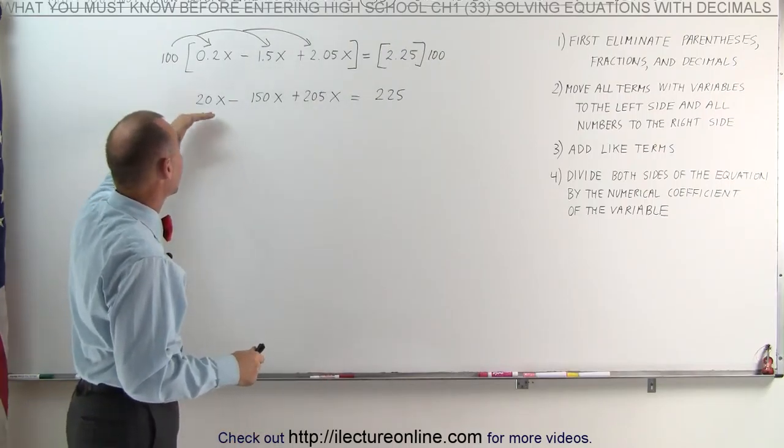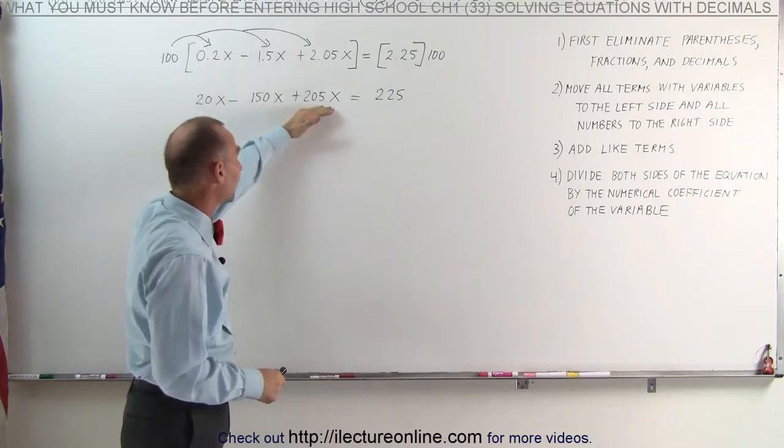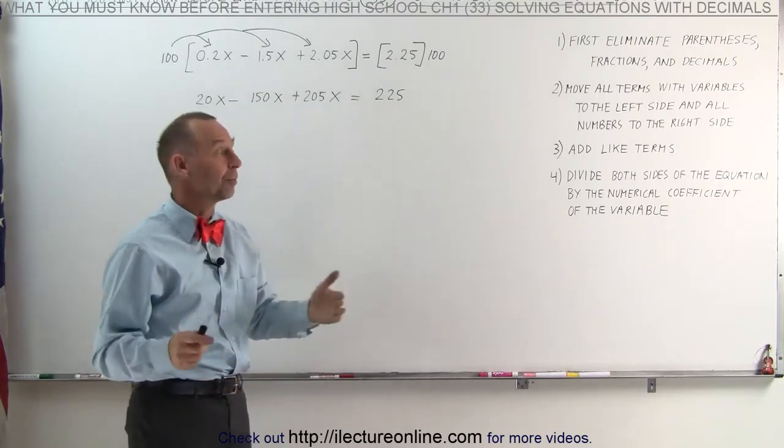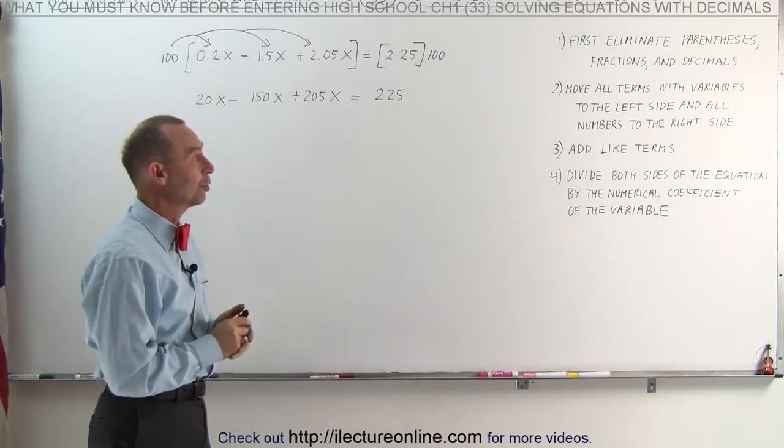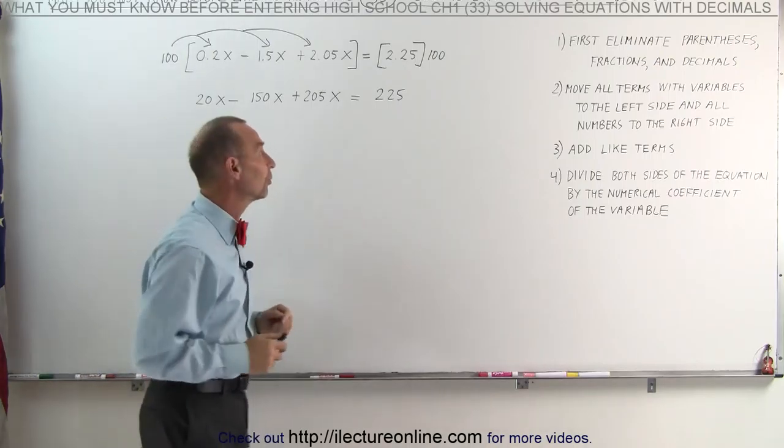But notice, we're already there. The left side only has terms with the variable x, the right side only has numbers, so we do not have to do step number two. Step number three, we combine like terms.